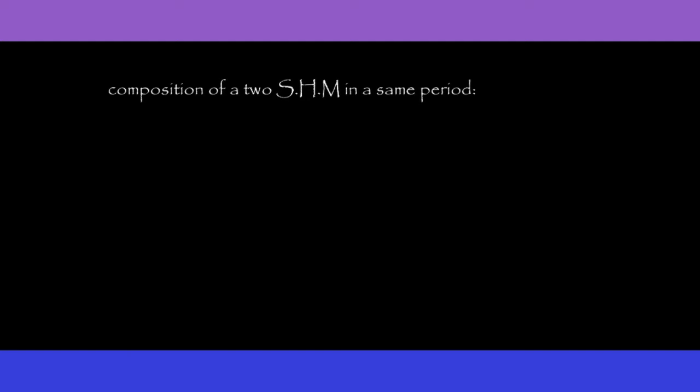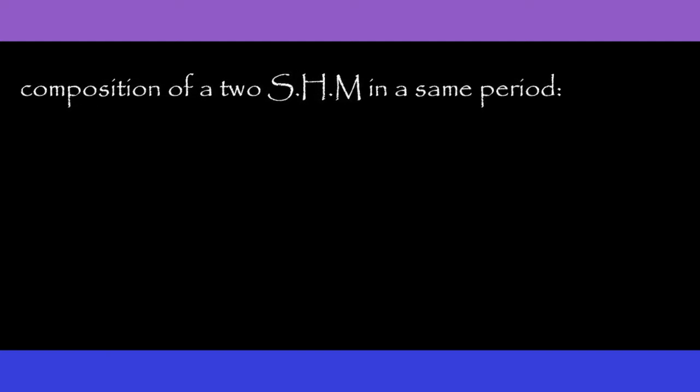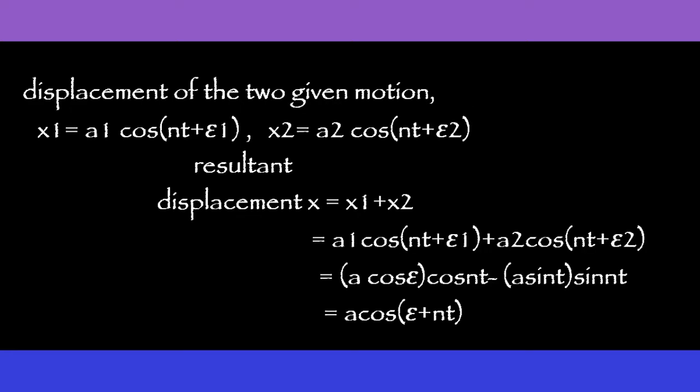Now we go to the second topic: composition of two SHMs in the same period. We take the displacement of the given motions. For the first motion: X1 equals A1 cos(nt plus epsilon1). For the second motion: X2 equals A2 cos(nt plus epsilon2). Therefore the resultant displacement X equals X1 plus X2, which gives A1 cos(nt plus epsilon1) plus A2 cos(nt plus epsilon2).